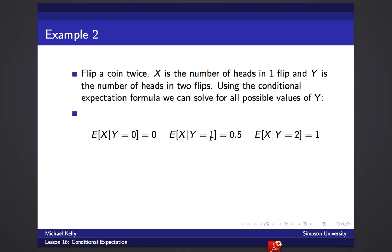If y equals 1, that means that there's one heads in the first two flips. But that one heads could be either the first flip or the second flip, so x has a one-half chance of being heads. And if y equals 2, that means both flips are heads, so then certainly the first flip was a heads, and x equals 1.